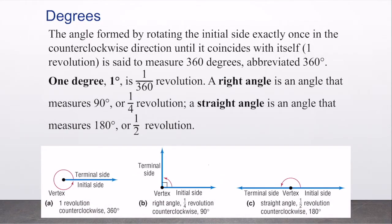The angle formed by rotating our initial side exactly once in the counterclockwise direction until it coincides with itself is one full revolution, and that is said to measure 360 degrees. We use this little degree symbol to annotate degrees. One degree is 1/360th of a revolution.